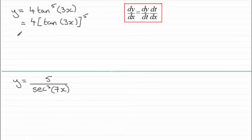And you might be able to do this straight off in your head but essentially I'd be letting t equal the tan of 3x.